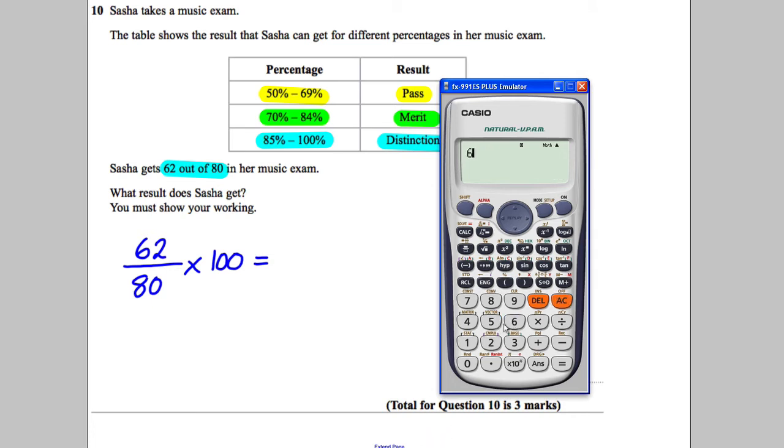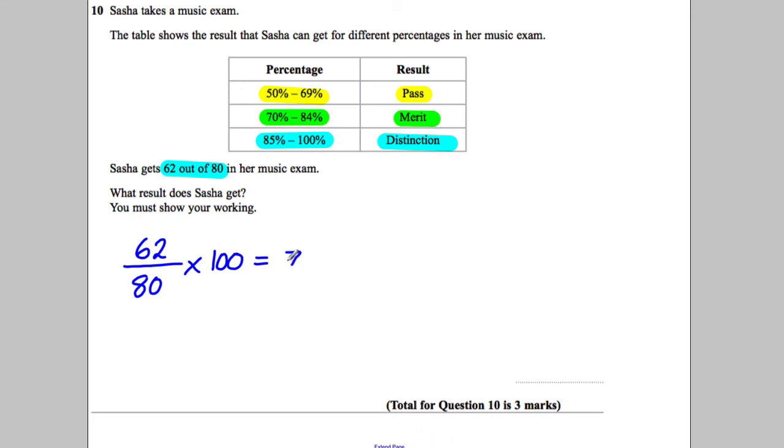And what we're going to do is we're going to do 62 divided by 80, and we're going to multiply that by 100. And we get 77.5%.